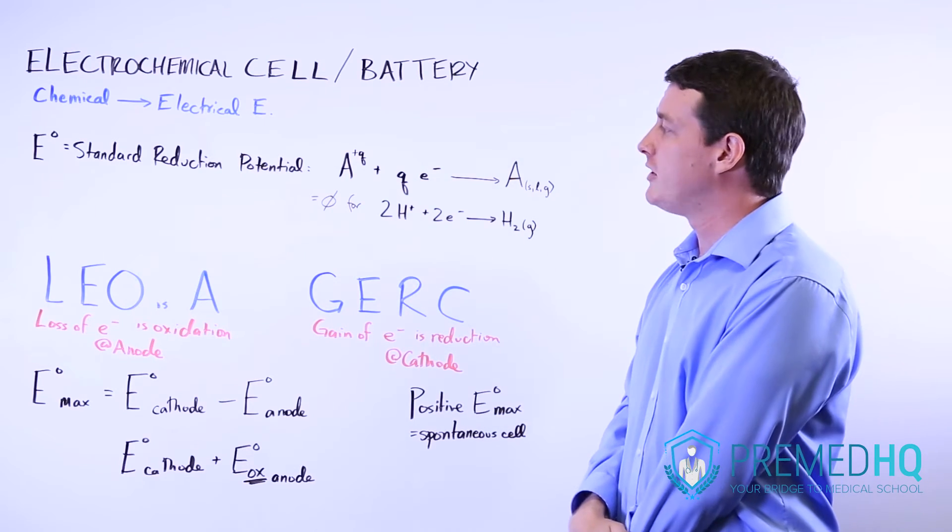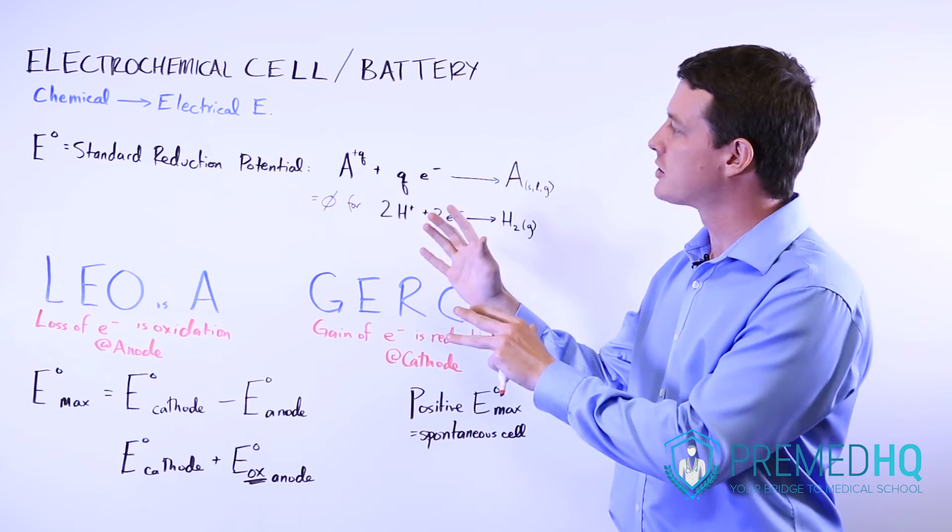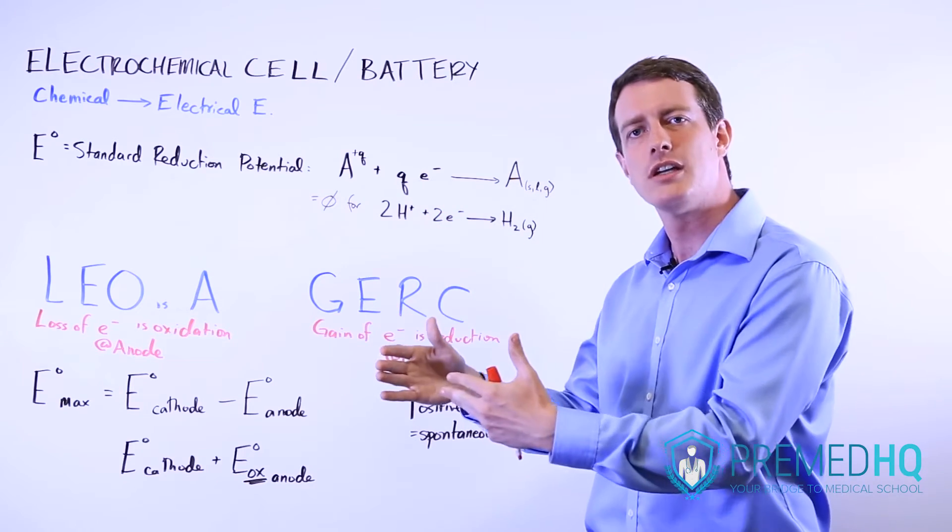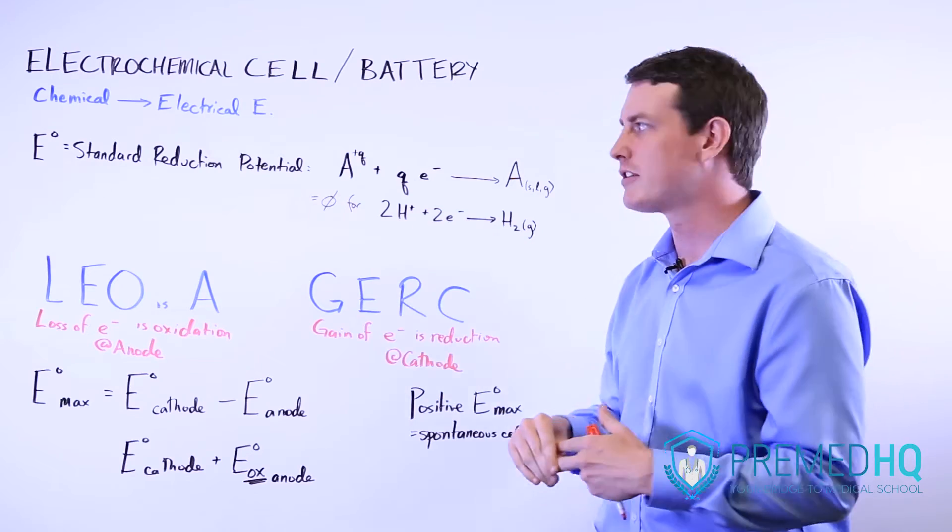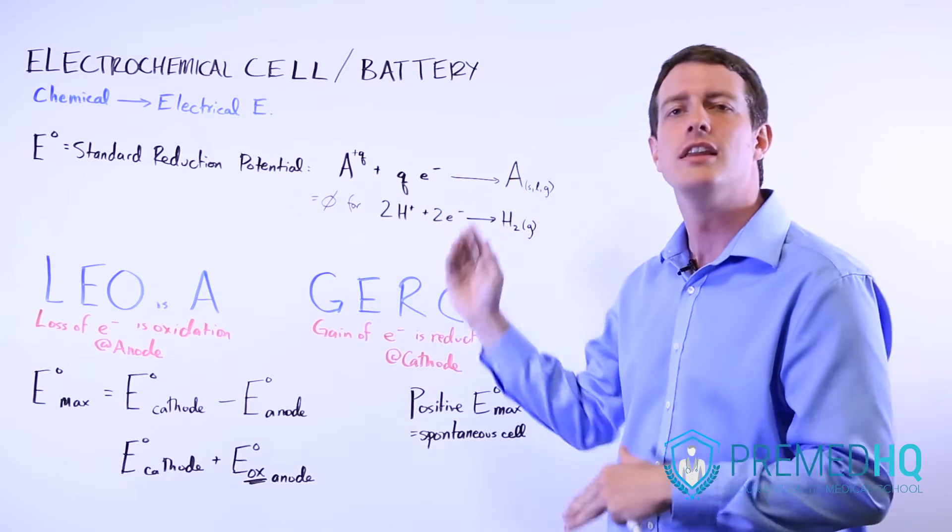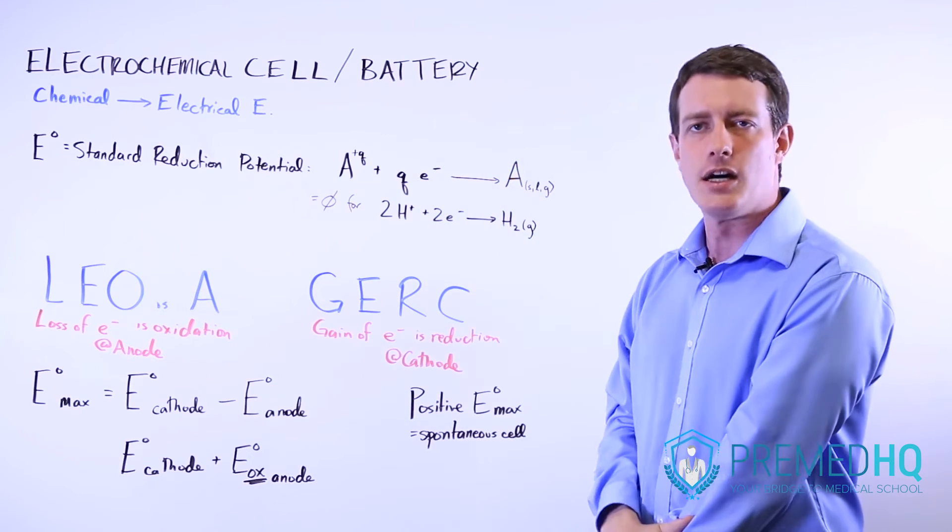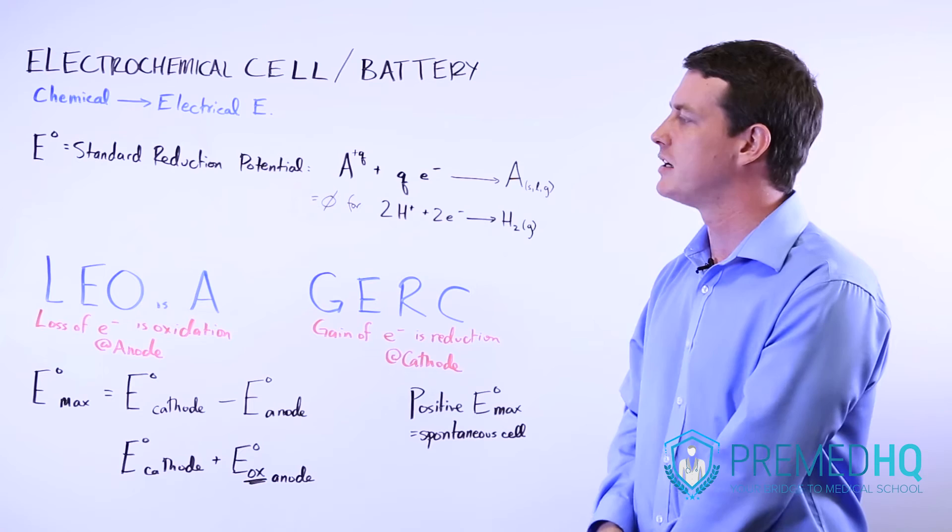Also be aware that if you have the standard reduction potential, but you're trying to figure out how much energy is yielded by oxidation, you just reverse the sign. So if the reduction potential is positive, the oxidation potential will be that same number, but negative. And that helps with energy calculations with all of these types of batteries.